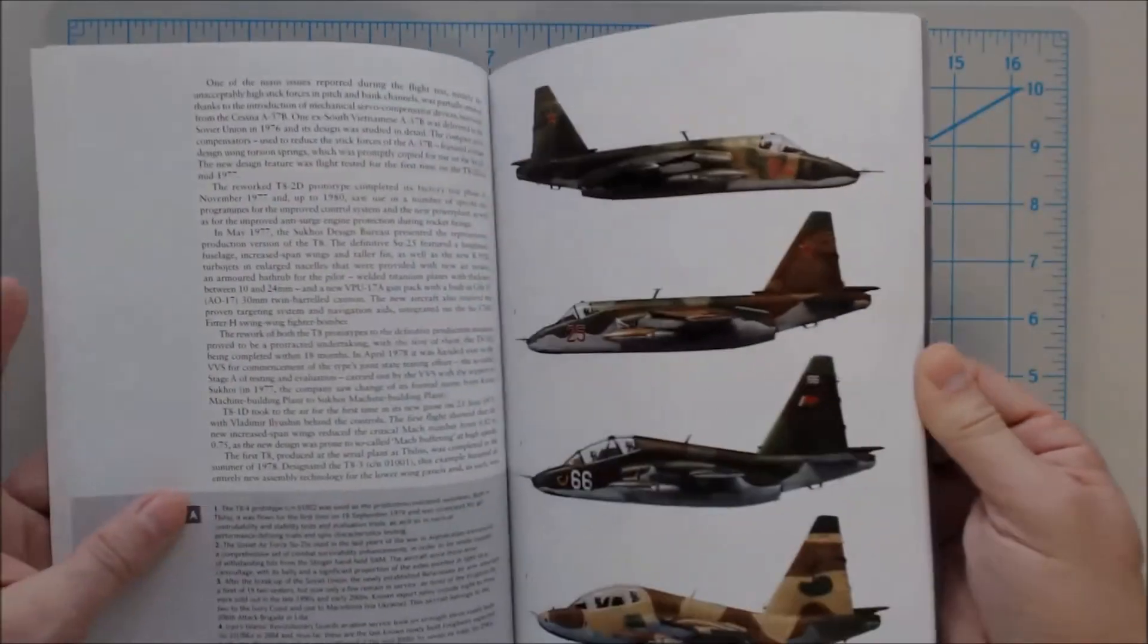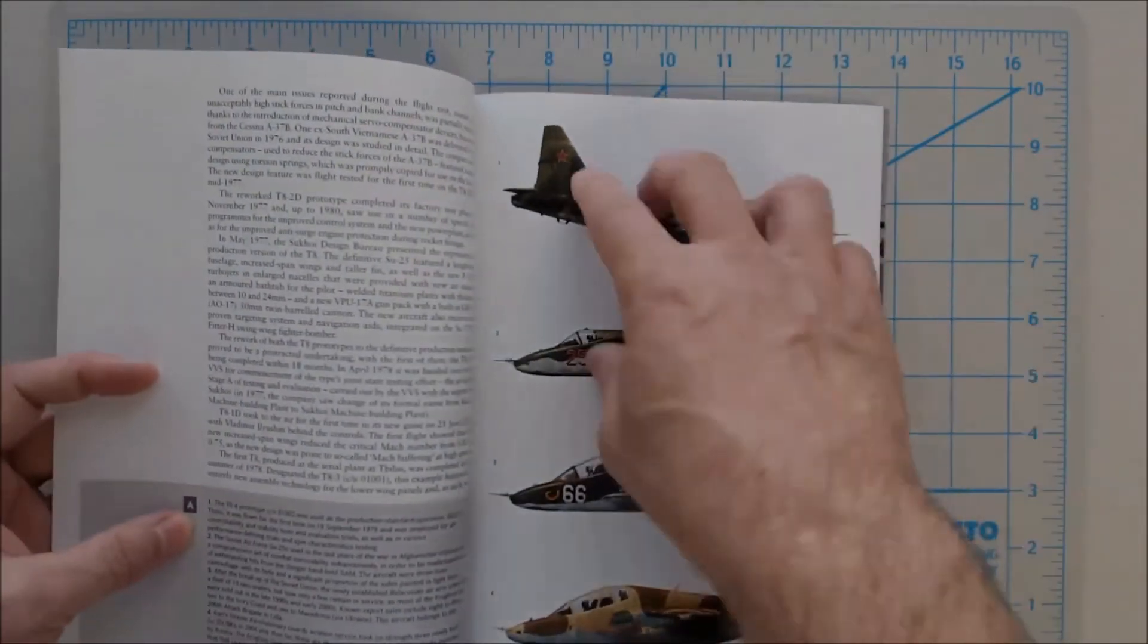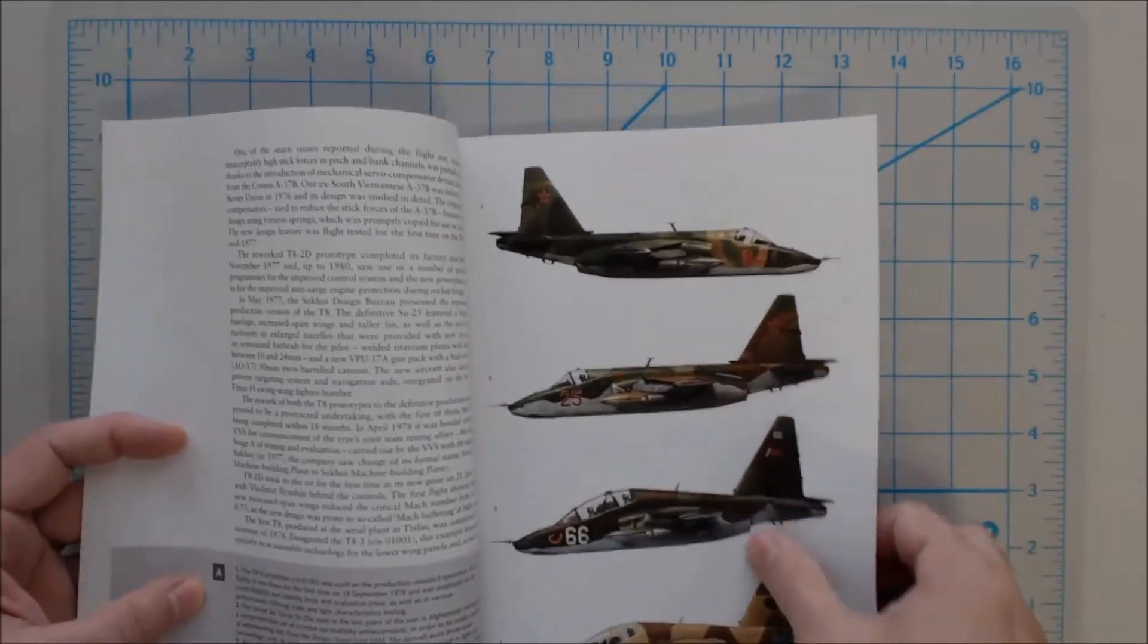And, again, they've got some color plates here of various aircraft. There's probably breakdowns on each of these planes over here on the left.